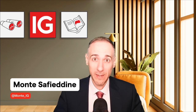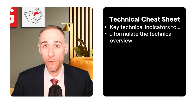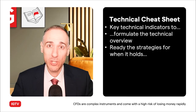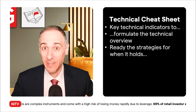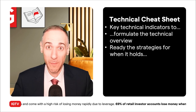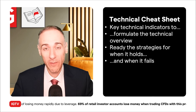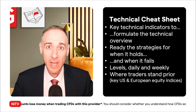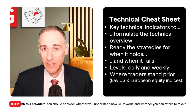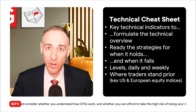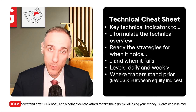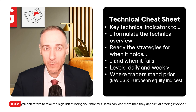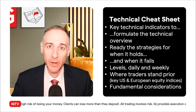Welcome back — this is a technical cheat sheet video where we take a look at key technical indicators to formulate a technical overview so we can prep our strategies. If you think the technical overview will hold, great, but some may disagree, so we need strategies ready for when the overview fails. We'll look at levels in both daily and weekly timeframes, as well as sentiment. We don't have COT speculator data for this one, so we'll look at where they stand on key US equity indices before mapping sentiment onto the chart, plus fundamental considerations for this week.